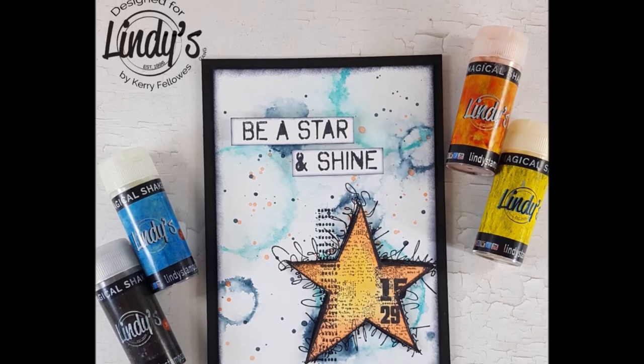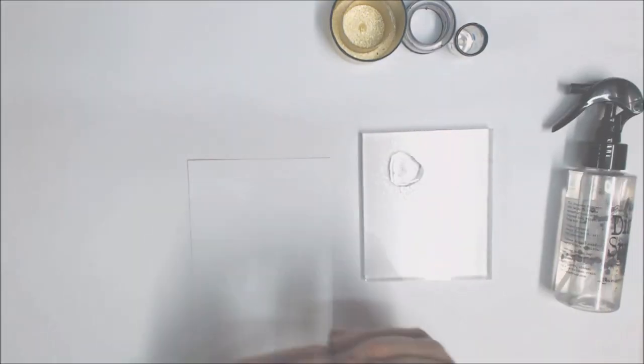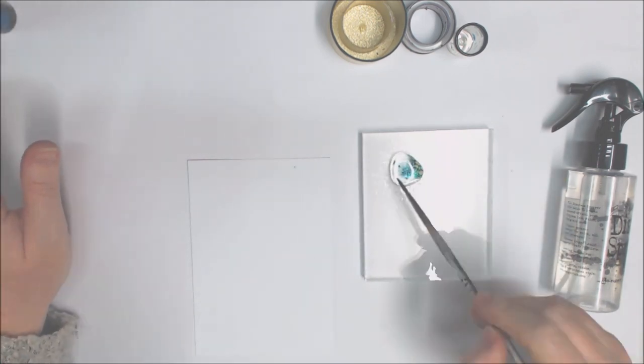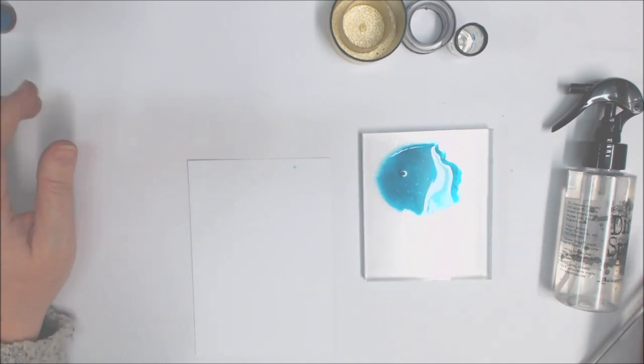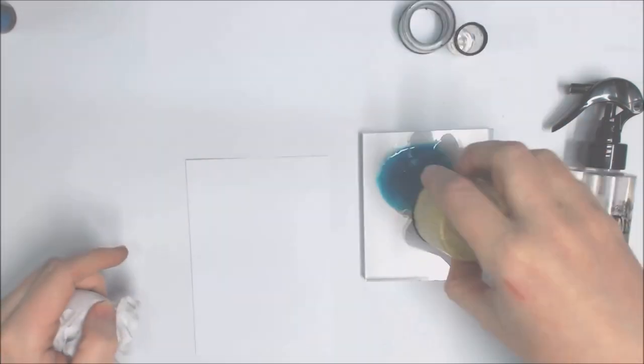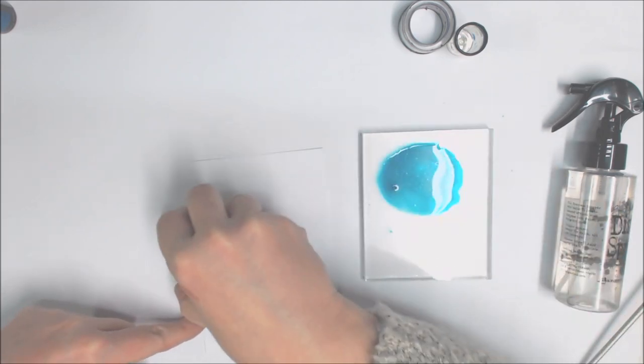To start with I've selected the Guttentag teal color and I'm just making a little pool of watercolor on an acrylic block. Then I'm using a lid off a spray can and dipping it into the color and stamping it onto the page to give me some rings.